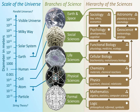Mathematics, first of all known as the science of numbers which is classified in arithmetic and algebra, is classified as a formal science, and has both similarities and differences with the empirical sciences. It is similar to empirical sciences in that it involves an objective, careful and systematic study of an area of knowledge; it is different because of its method of verifying its knowledge, using a priori rather than empirical methods.